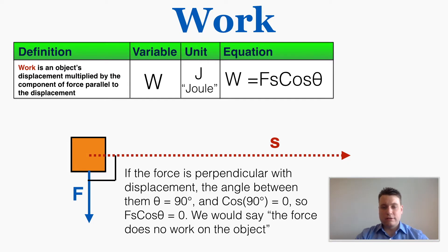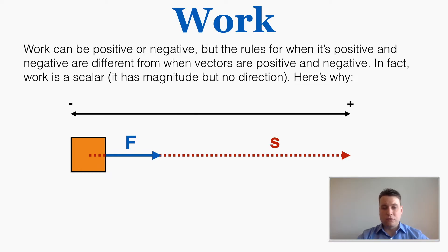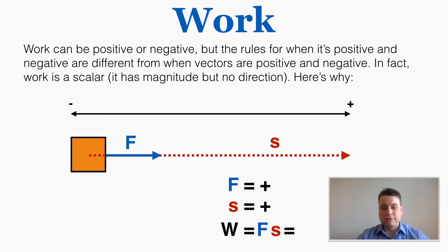Work can be positive or negative, but the rules for when it's positive or negative are different from when vectors are positive or negative — in fact, work is a scalar. It has a magnitude but not a direction. For example, if I define right as positive, a force pointing right and a displacement pointing right are both positive, so the work is also positive.